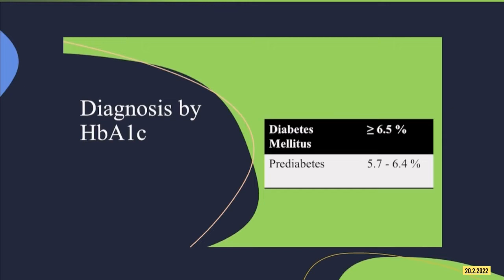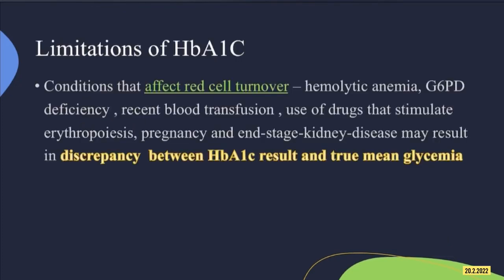If HbA1c is greater than or equal to 6.5%, the patient has diabetes. HbA1c of 5.7% to 6.4% indicates pre-diabetes.